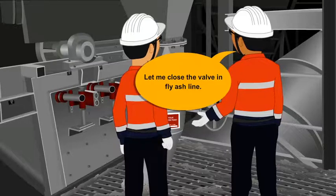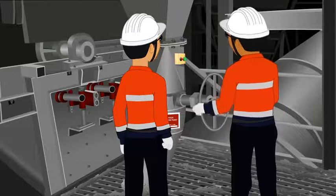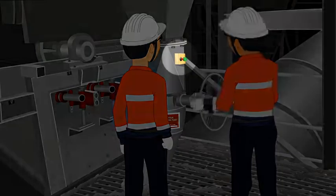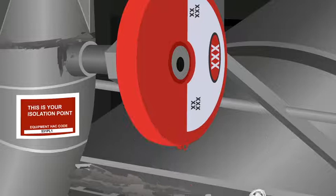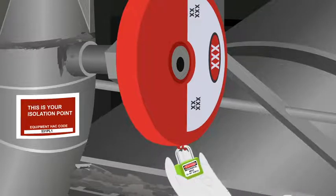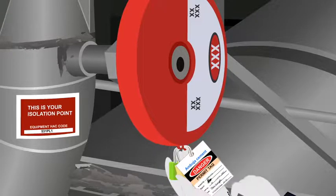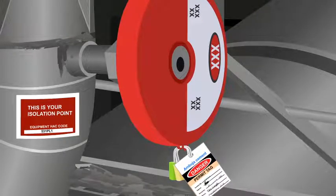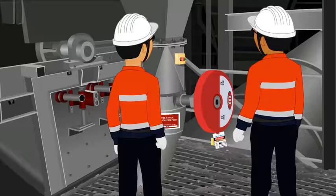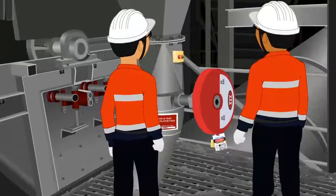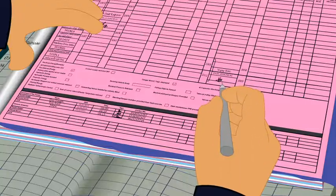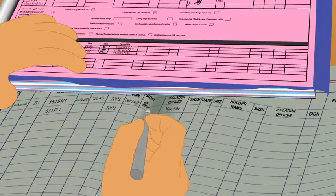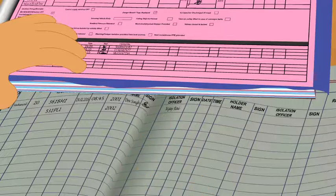VJ closes the valve on the fly ash line, attaches the isolating device, and applies his green lock. Dev then applies his yellow lock and attaches a permit tag. Dev gets the remaining relevant energy isolations completed in a similar way. VJ signs on the permit and Dev signs on the energy isolation register.